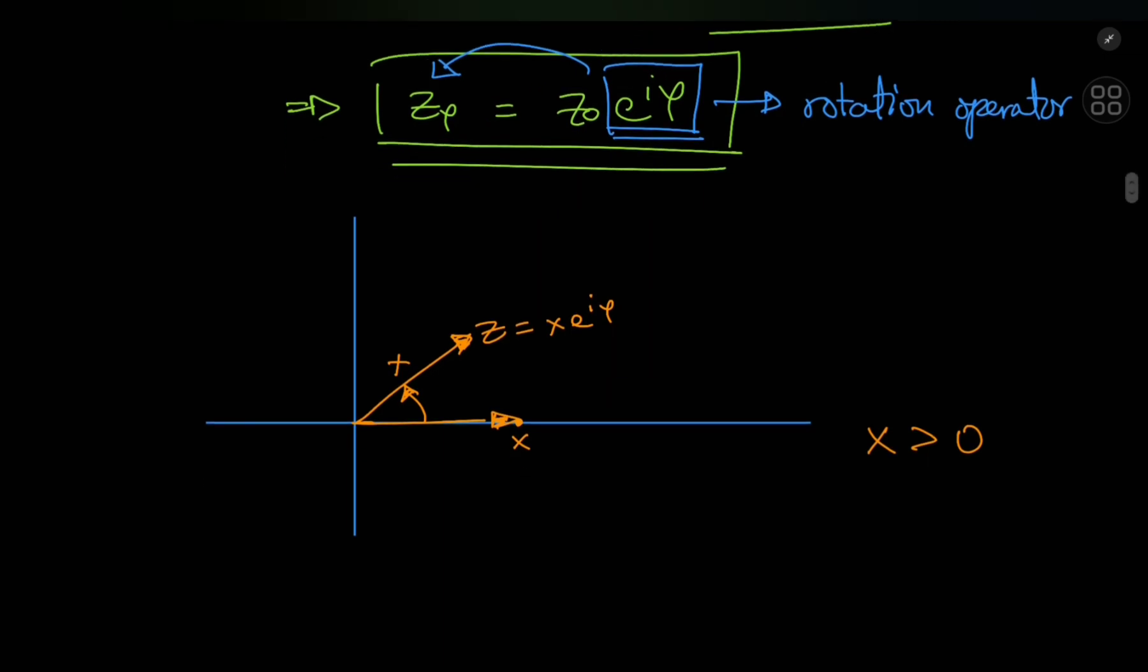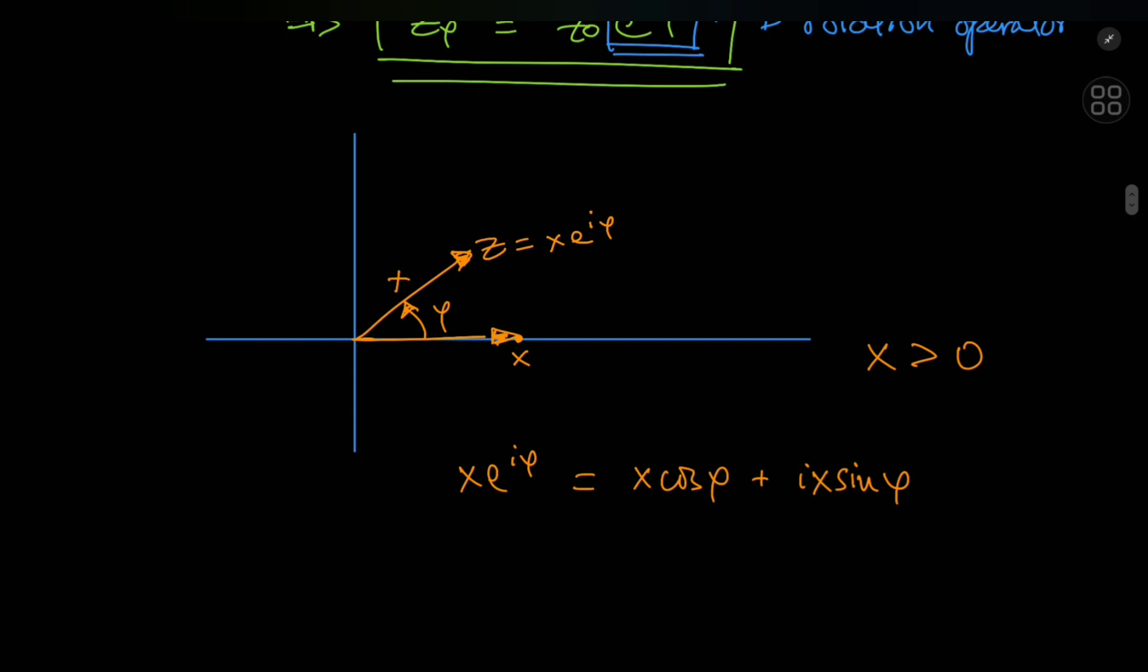In other words, what we have here is a vector x times e to the i phi, and the horizontal component of this vector using basic trigonometry would be x times the cosine of phi, plus i times the vertical component, which would be x times the sine of phi. And because x is just some positive real number...